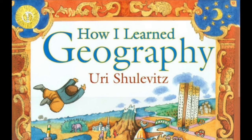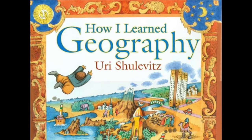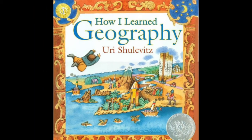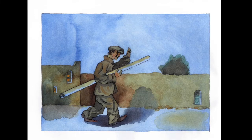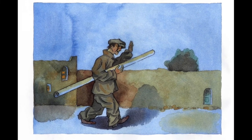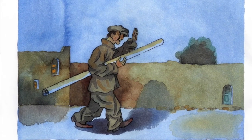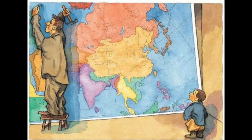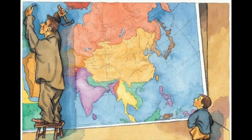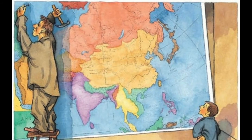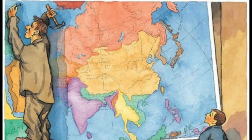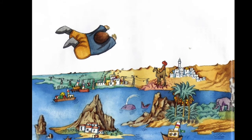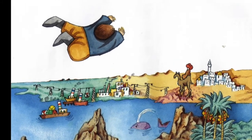This story is about a boy and his family who are living in poverty in a strange country. They don't have much food and rely on their father to bring home food to eat. One evening the father brings home a world map instead of food, and the boy gets upset. However, when the map gets hung on the wall, the boy is taken to exotic places without ever leaving his room and discovers that the map feeds him in a way that food never could.